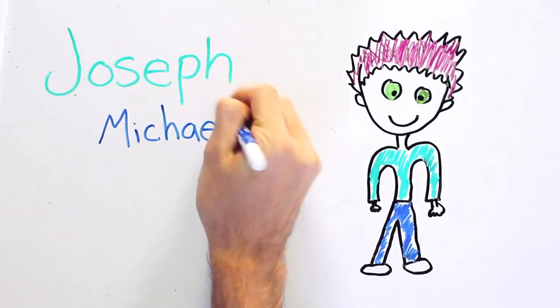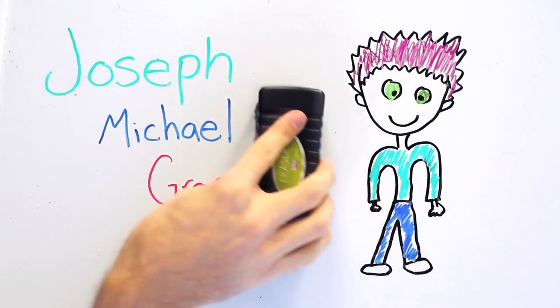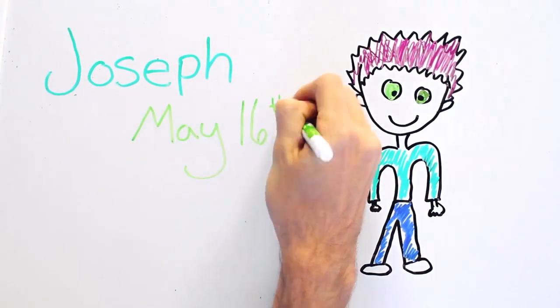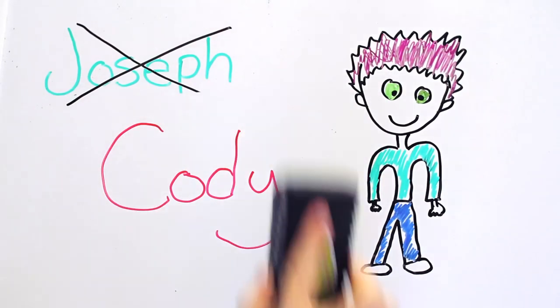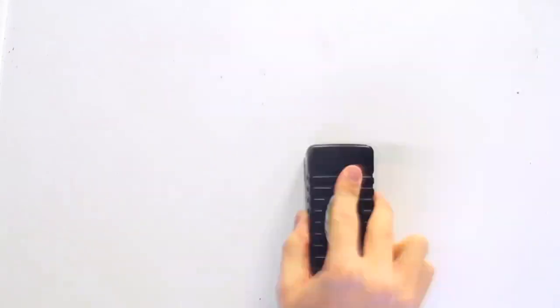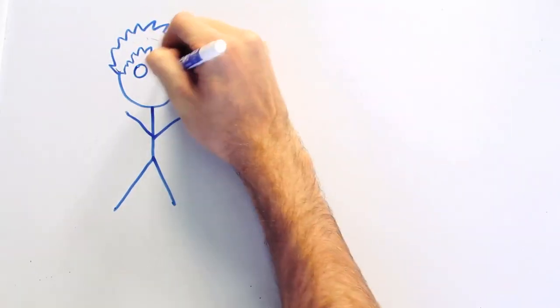So my name is Joseph Michael Graceffa and I was born May 16th, 1991. And I remember I hated my name growing up. I think I had my parents call me Cody for a week, but I hate it, so I made them call me Joey again.